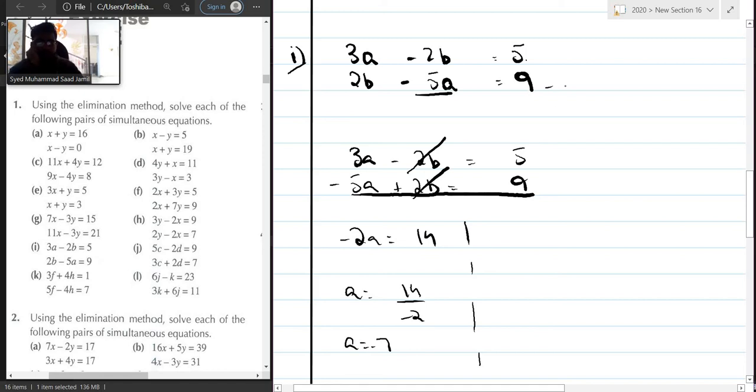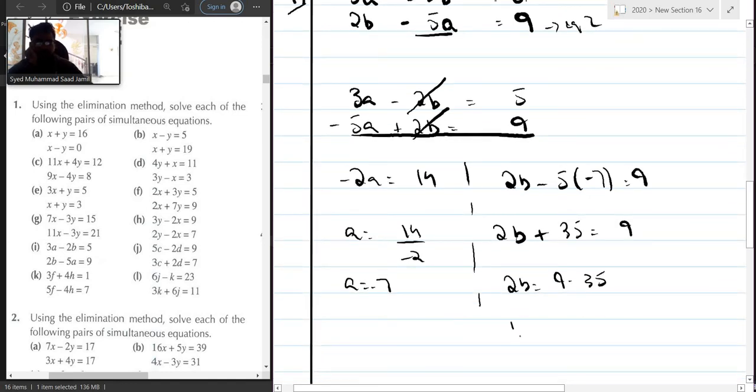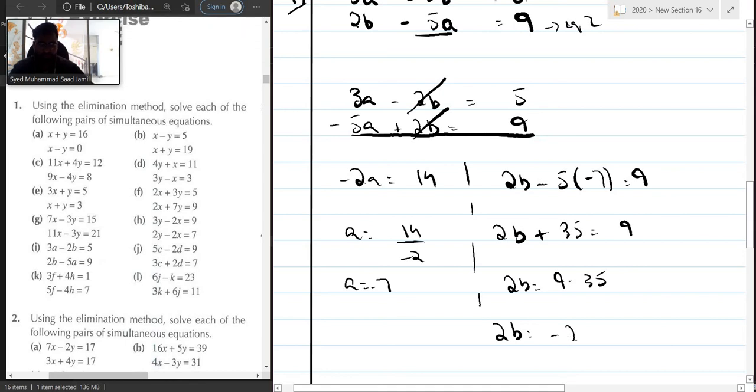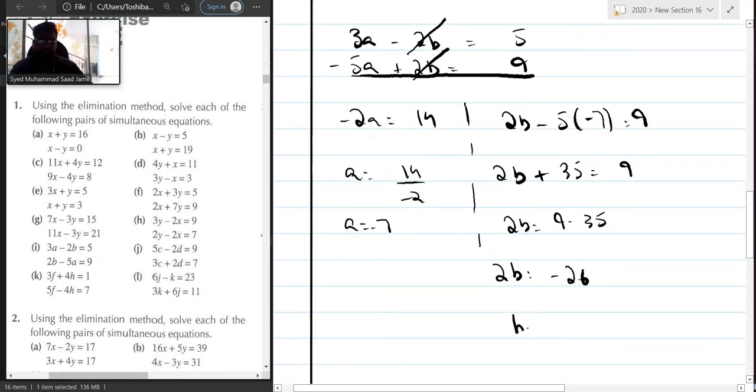Now let's solve for b. So let's use equation 2 for b. So 2b minus 5, instead of a write down minus 7, is equal to 9. 2b is equal to, minus minus is plus, 5 multiplied by 7 is 35, is equal to 9. 2b is equal to 9 minus 35. 9 minus 35 is minus 26. So b is equal to minus 26 divided by 2. So b is equal to minus 13. And hence you are solved.